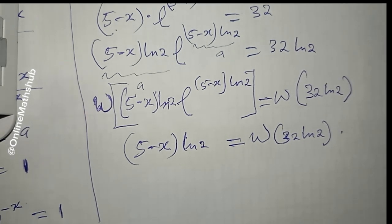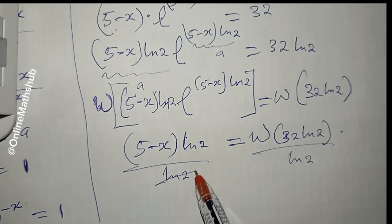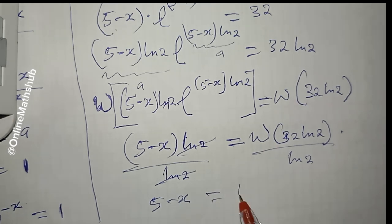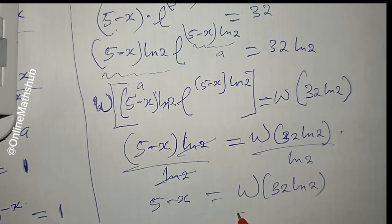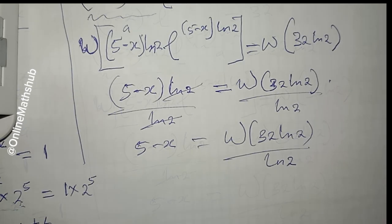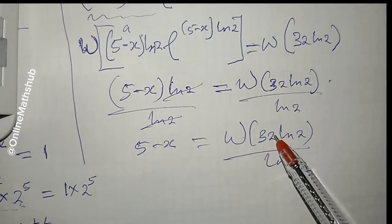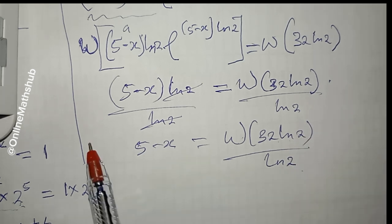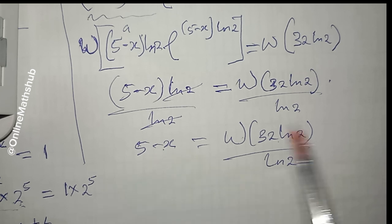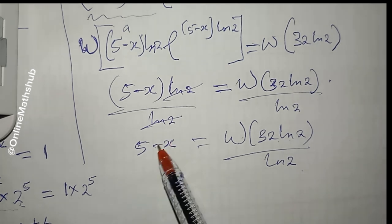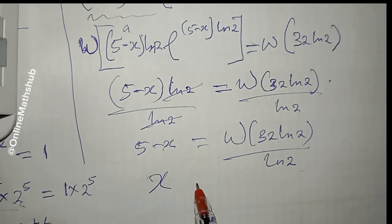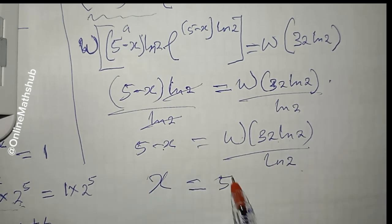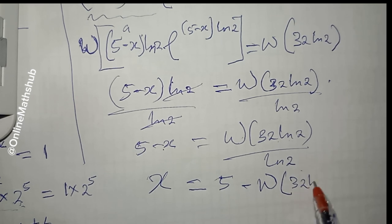Dividing both sides by ln 2, we get 5 − x = W(32 · ln 2) / ln 2. Rearranging — moving the Lambert W term to the left and x to the right — we find x = 5 − W(32 · ln 2) / ln 2.